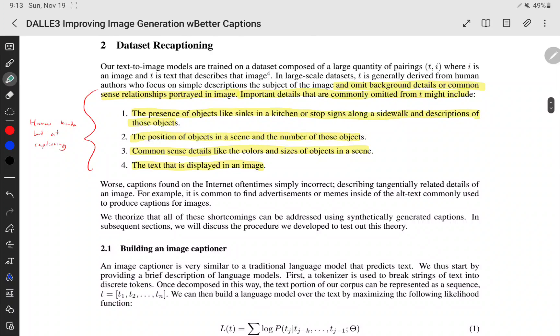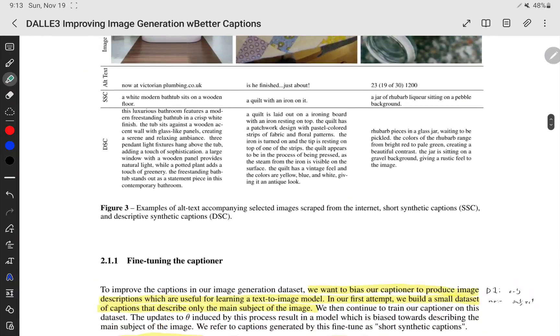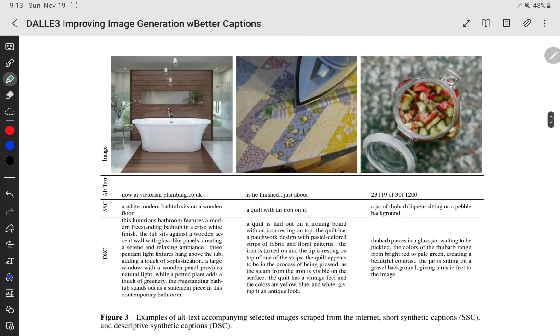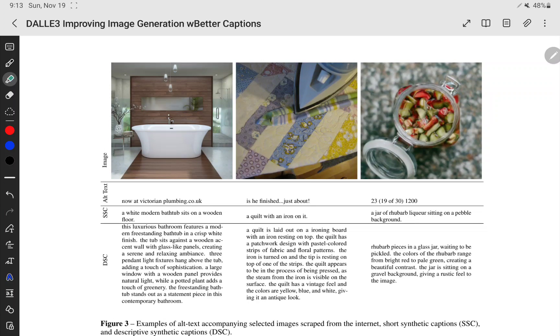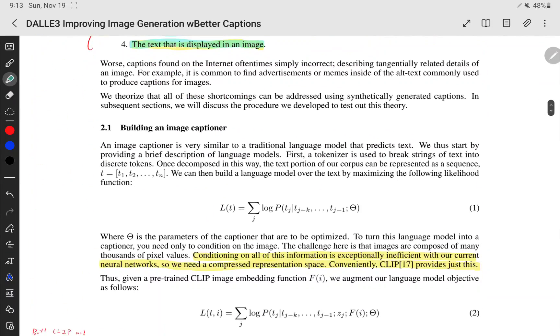They show down here that there's multiple parts to humans are quite bad at generating captions. Humans are great at generating text data, which is why you can train such a good large language model. But apparently, humans suck at captioning images. There's a lot of problems. Like, humans don't include the presence of objects, such as sinks or background objects, or stop signs along a sidewalk. That's not in the description. Or the position of objects, or common sense details, like the colors and sizes of objects, or the text that is displayed in an image. They do show that down here. Funnily enough, the old captions were quite bad. This one was 'is he finished just about.' I guess this was the alt text.